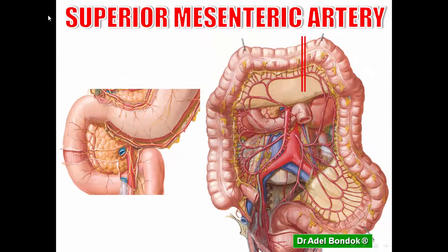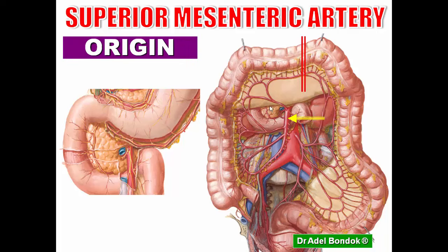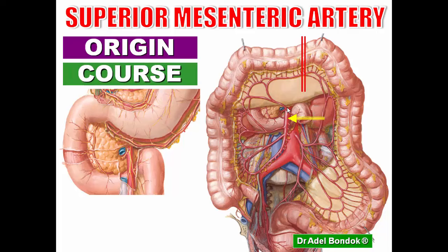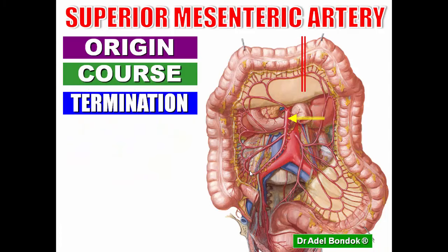The superior mesenteric artery is the artery of the midgut. The midgut begins from the major duodenal papilla in the middle of the second part of the duodenum, till the junction between the right two-thirds and left one-third of the transverse colon. It arises from the front of the abdominal aorta at the level of the lower border of L1 in the transpyloric plane. It descends in front of the uncinate process of the pancreas, then in front of the third part of the duodenum, and enters the root of the mesentery to terminate in the right iliac fossa by anastomosing with a branch from the ileocolic artery.